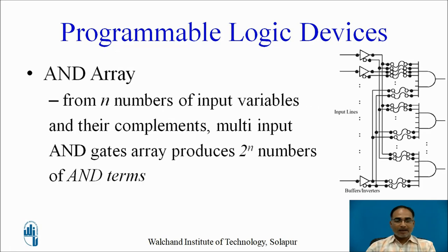So what is an AND array? AND arrays are used to generate AND terms or product terms. From N number of input variables and their complements, a multi-input AND gate array produces at most 2 raised to N number of AND or product terms. Here you can see the structure of an AND array. These AND gates are multi-input AND gates with fusible links which can be programmed.